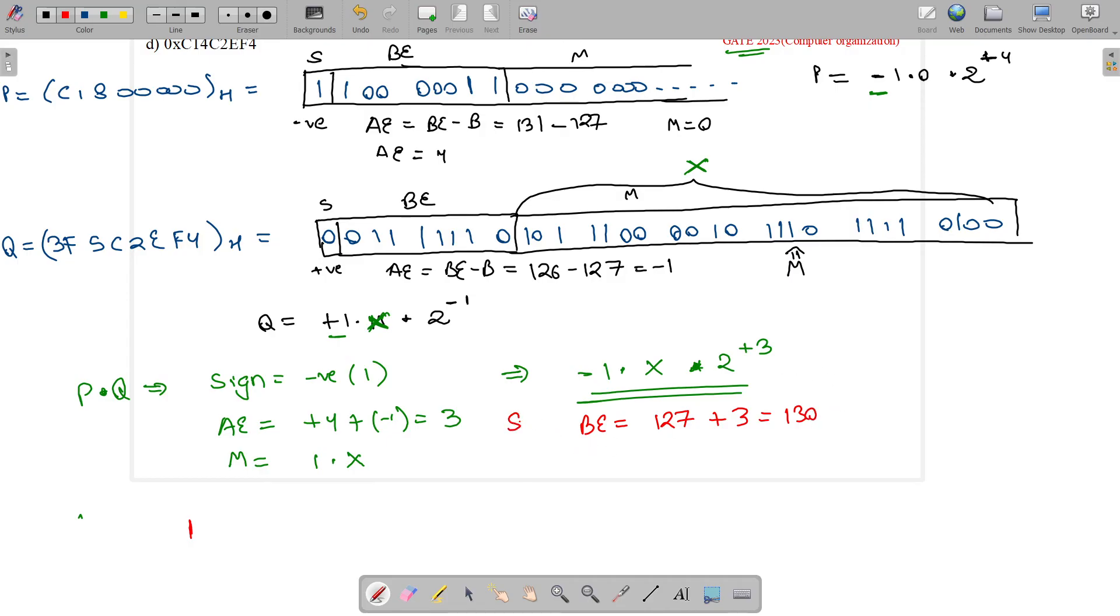130 in binary is: 10000010. The complete binary representation is 1 10000010 10111000101111101111010100. Let me write the mantissa: 10111000101111101111010100.